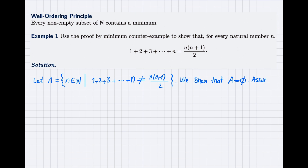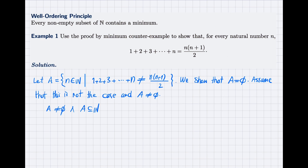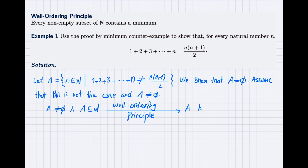Assume that this is not the case, and A is not empty. Since A is not empty and A is a subset of ℕ — because A is defined to contain only elements from the natural numbers satisfying an extra condition — then according to the well-ordering principle, I can conclude that A has a minimum.